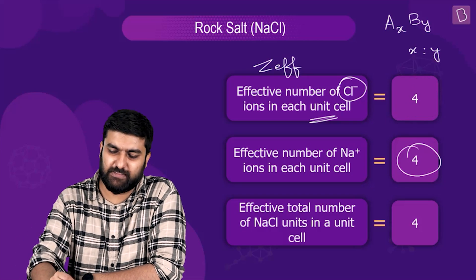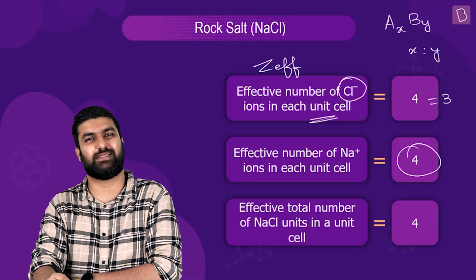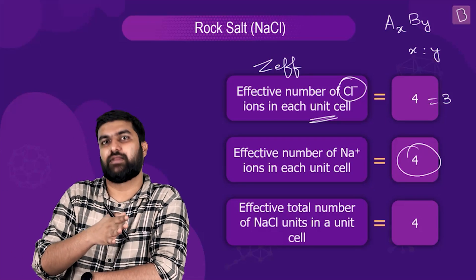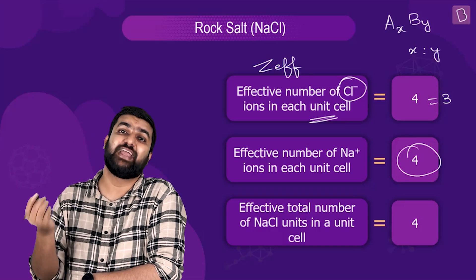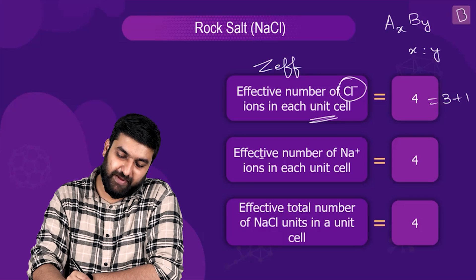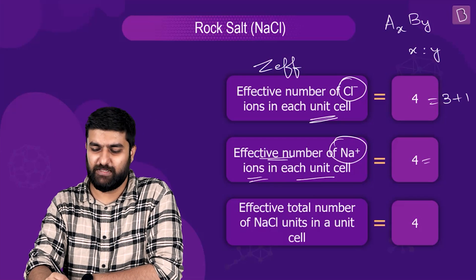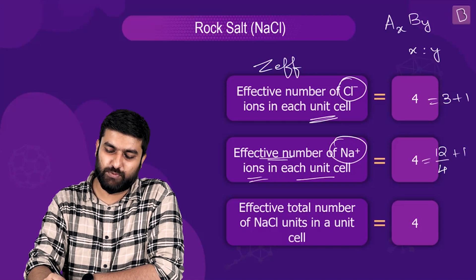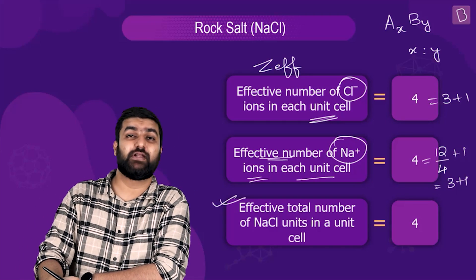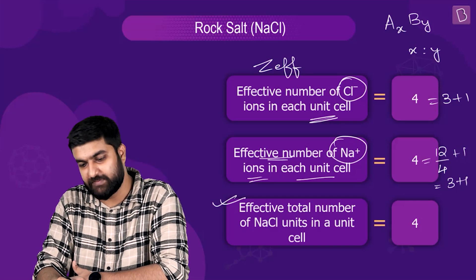We are dealing with FCC, so for Cl⁻: six face centers each contributing half gives three, plus eight corners each contributing one-eighth gives one — total of four. For Na⁺ in octahedral voids: 12 edge centers divided by four gives three, plus one body center gives four. So the effective total number of NaCl units in a single unit cell is four — four Na⁺ and four Cl⁻.